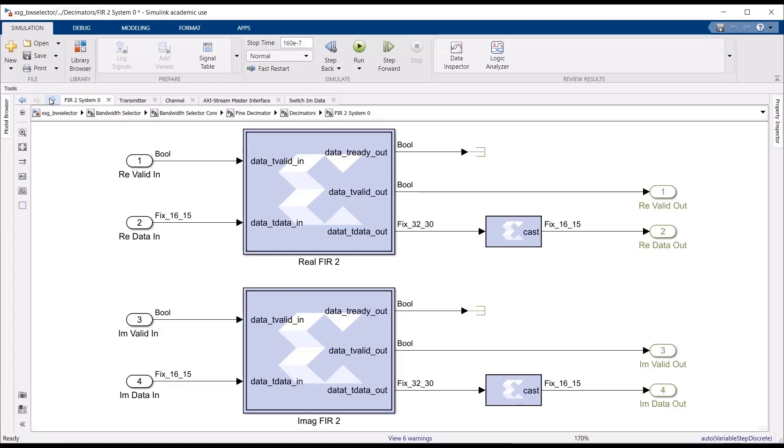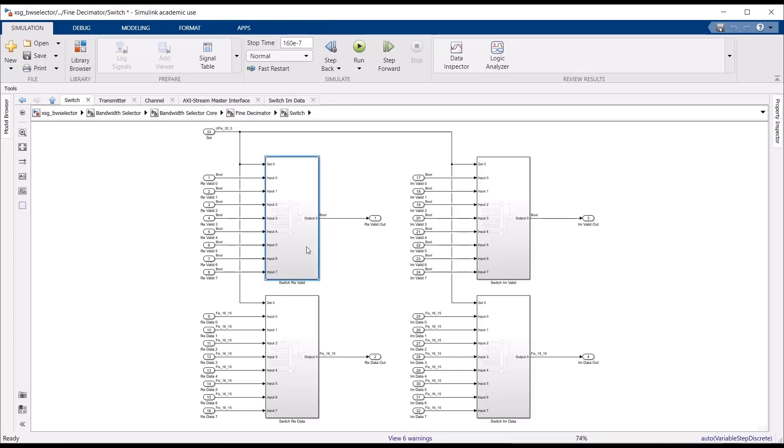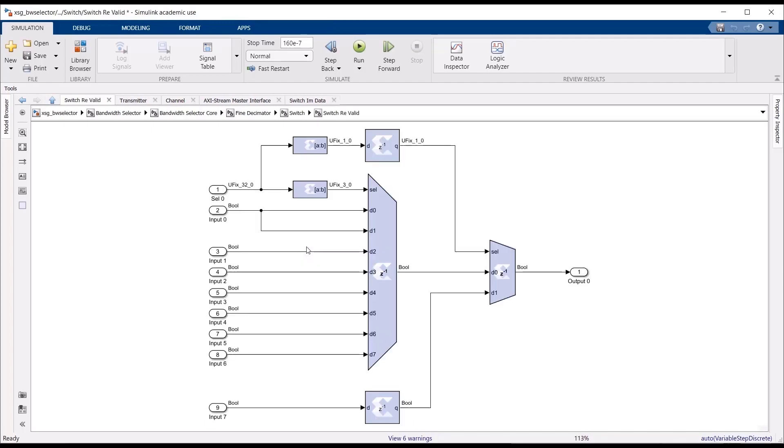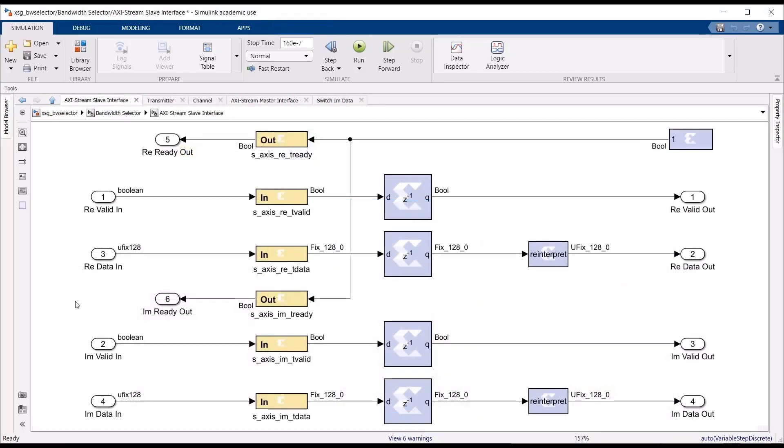The FIR compiler has a great number of interesting properties that can be configured by the user. However, today we will not include this in our discussion. After designing the cascade of half-band FIR decimation filters, we simply create a switch that will allow us to select between different points in the filter cascade. Now that we have designed our architecture, we can simply add axis stream interfaces to the input and output of our design. This will simplify the connection of our architecture when later moving to Vivado IP Integrator.